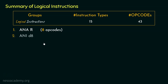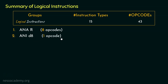Coming to the second instruction type, ANID8: using this instruction we can perform AND between the content of the accumulator and the second operand sent via the instruction itself — that is, 8-bit immediate data. This instruction type has only a single opcode.